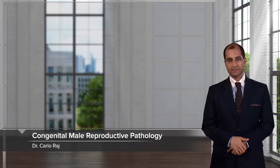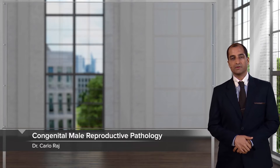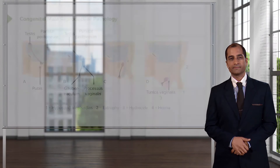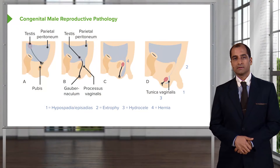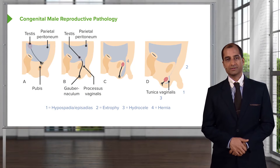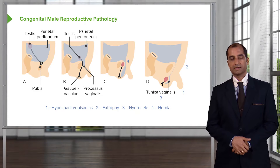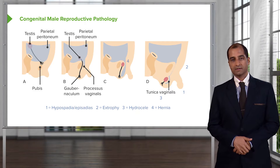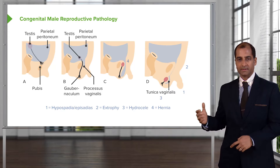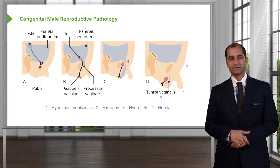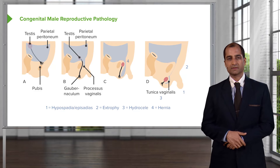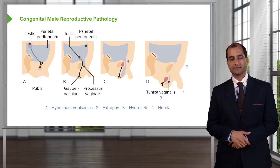Here we'll take a look at the male reproductive pathology, and just like we have done in many organ systems, we shall approach this in an organized fashion. We'll begin our discussion by looking at congenital male reproductive pathology, and here you'll notice just a couple of topics integrated so that you can get a good idea as to what to expect in terms of development of the testes.